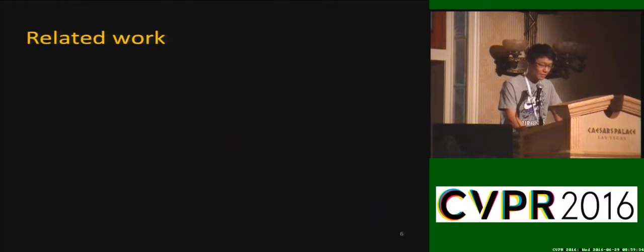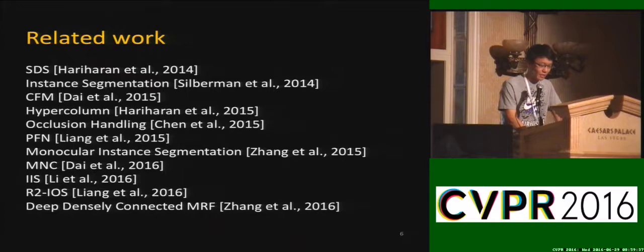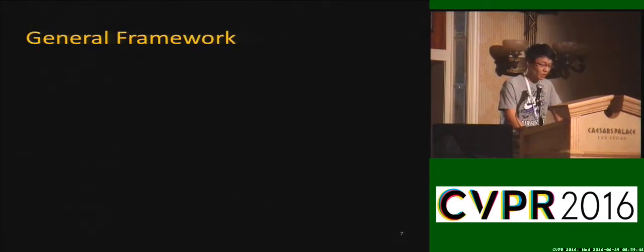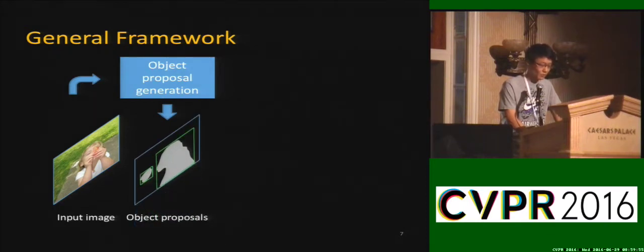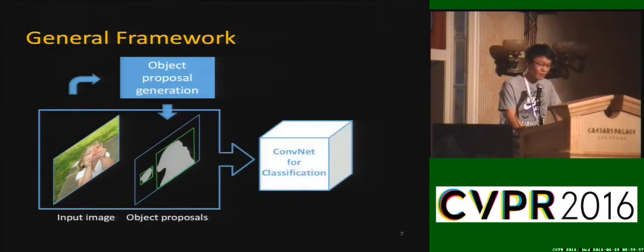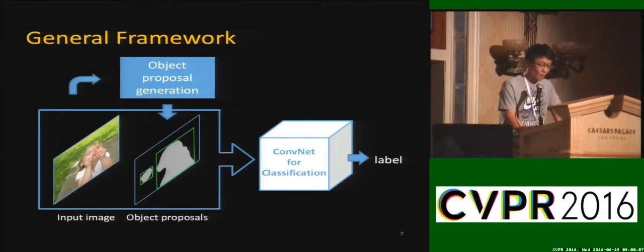SDS is a relatively new task, described in 2014 by Hariharan and Silberman. Following it, several methods were introduced in this field. The general framework of SDS on natural images is to classify object proposals. The first step is commonly to generate segment-based object proposals, which together with the input image are fed to convolutional neural networks for classification. This is an effective process adopted in most previous work.